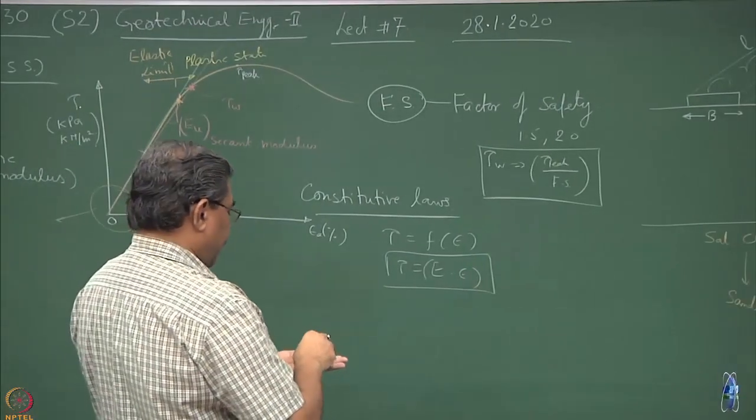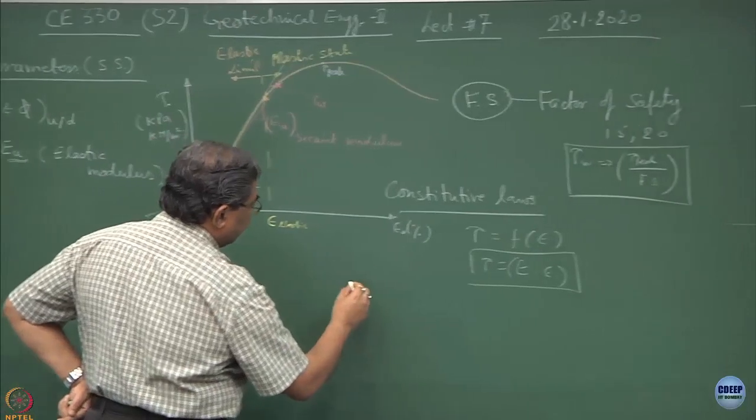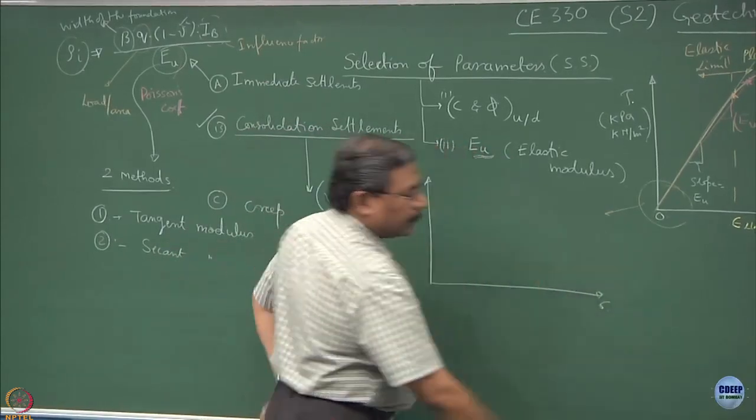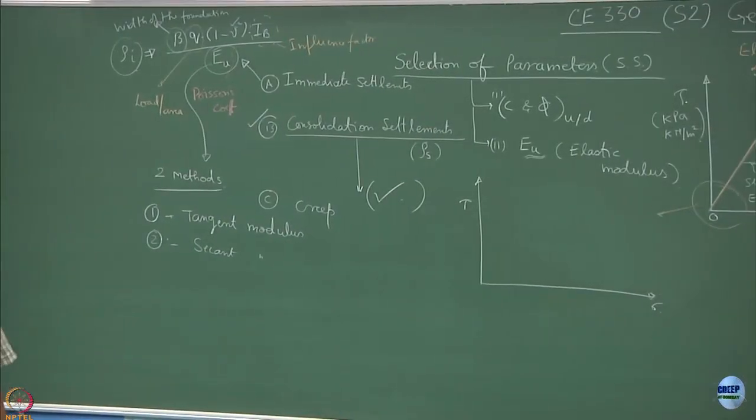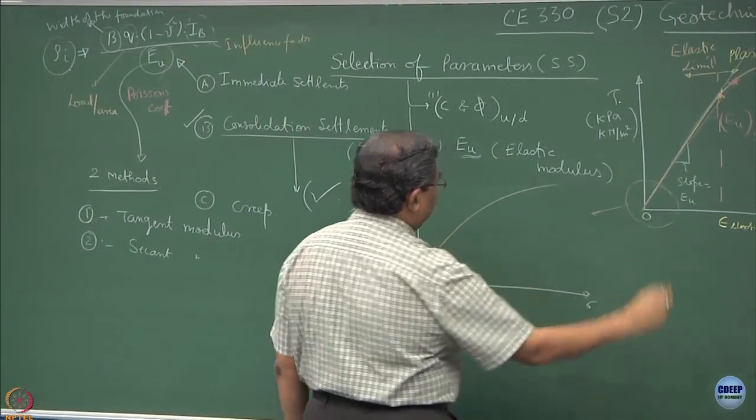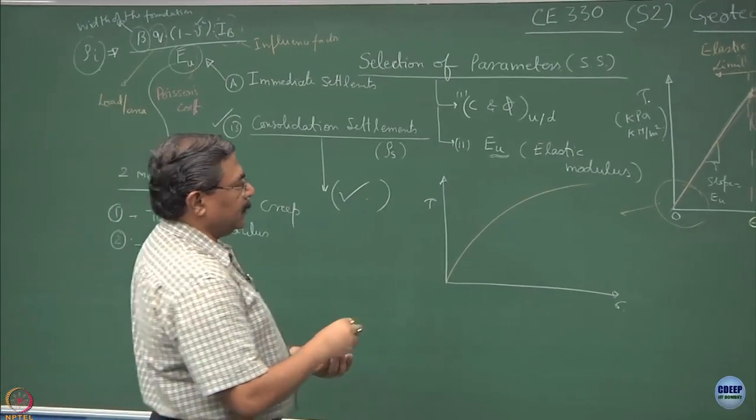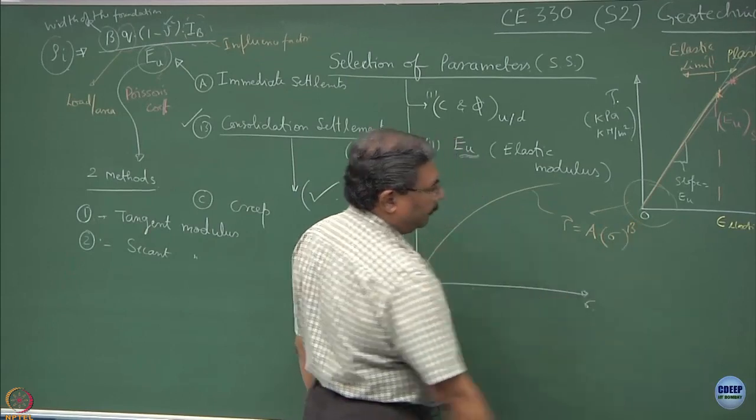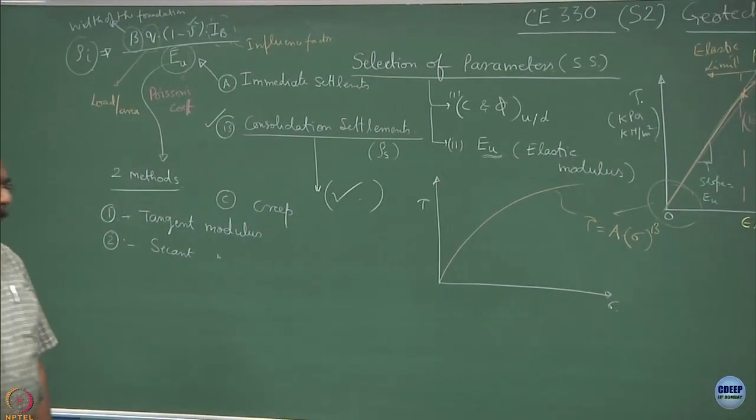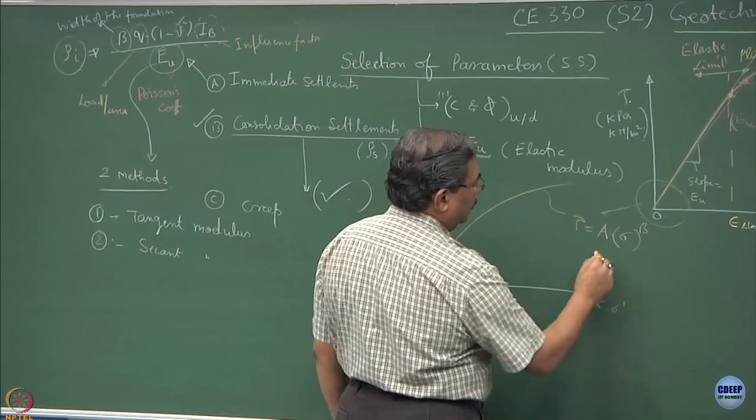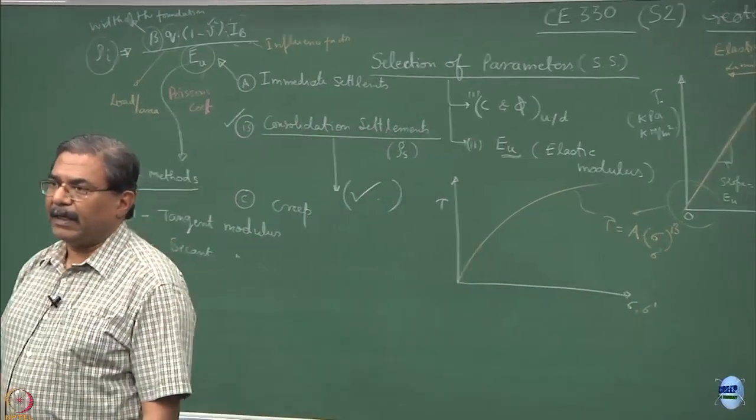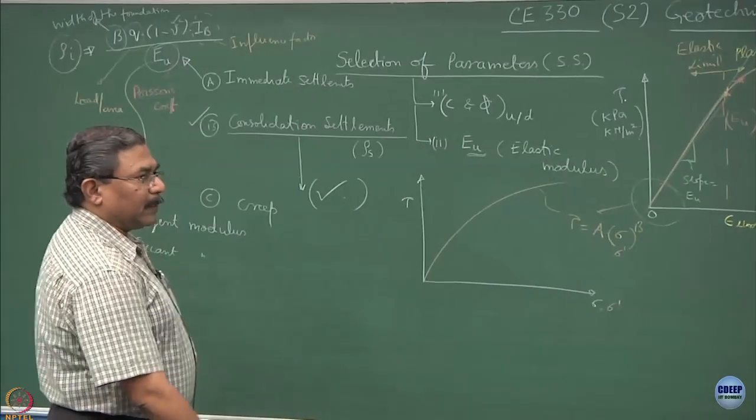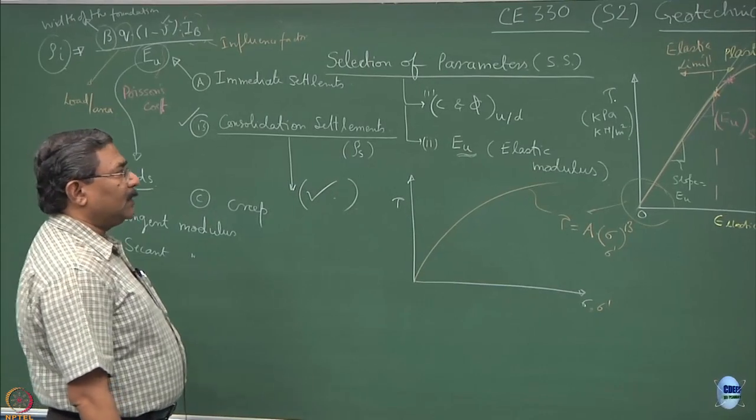One more thing which I wanted to discuss in details is about the curvilinear behavior of the graph we get. In general form, if I plot tau versus sigma, I will be getting a failure envelope. The general form of this envelope is tau equal to A multiplied by sigma to the power B. Depending upon what type of analysis you are doing, total stress or effective stress analysis, this either becomes sigma or sigma prime, where A and B are material constants. Now be careful. I hope you are realizing that what I am going to talk about is the selection of the material property.